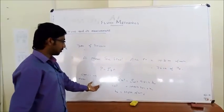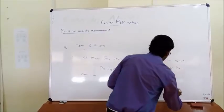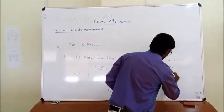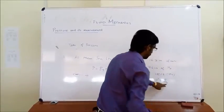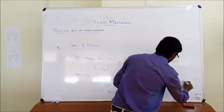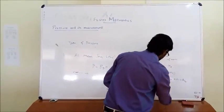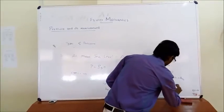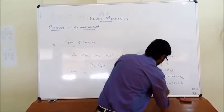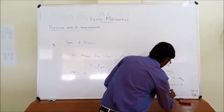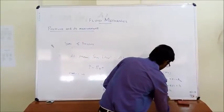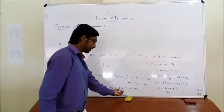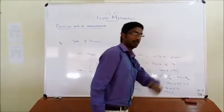Similarly, we can find how 76 centimeters of mercury is obtained. We write 10 raised to 5 = ρ_mercury × 9.81 × h_mercury. The density of mercury is 13,600 kg/m³. Solving for h, we get 0.76 meters, that is 76 centimeters of mercury. So 1 atmospheric pressure equals 10.3 meters of water and also equals 76 centimeters of mercury.